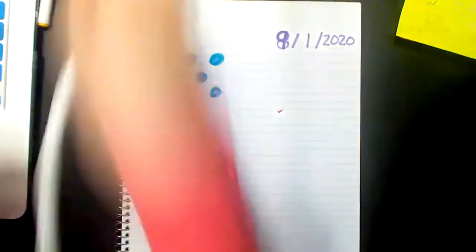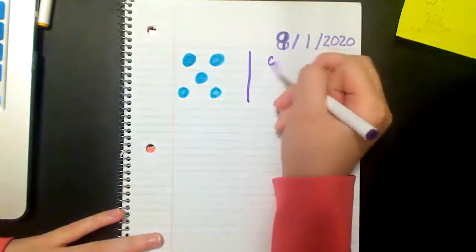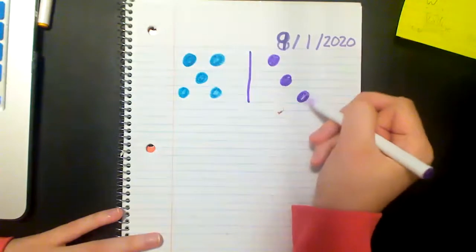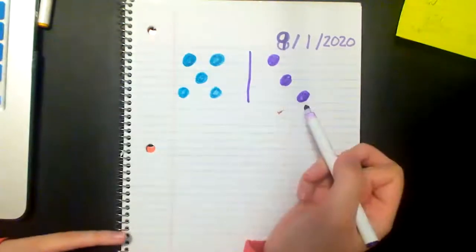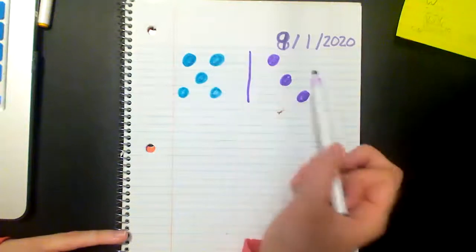There's some dots. I'm going to use a different color for the next one. And I make a line to separate between the dots and then I'm going to make some dots over here. Okay so now that my dots are both drawn I'm going to count how many dots I have for blue and how many I have for purple.